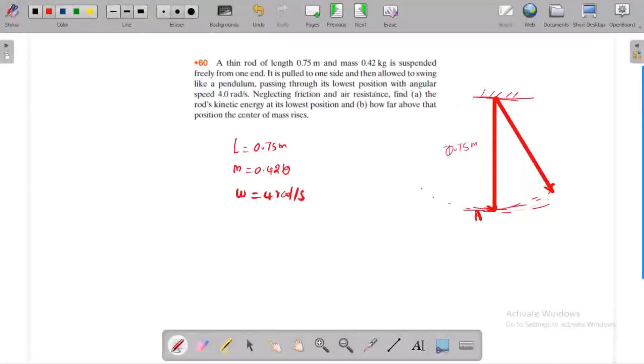Neglecting friction and air resistance, find the rod's kinetic energy at its lower position, the lowest position. And how far above that position the center of mass rises.